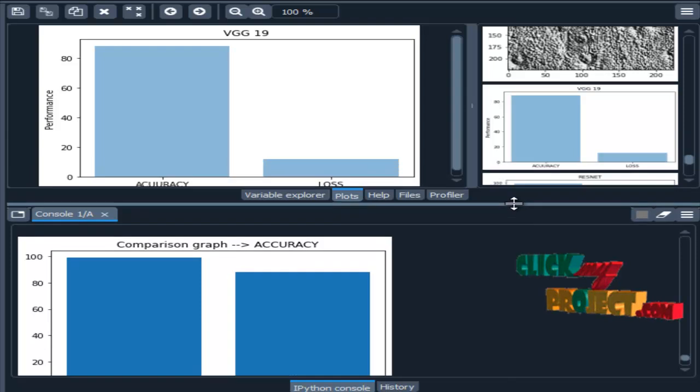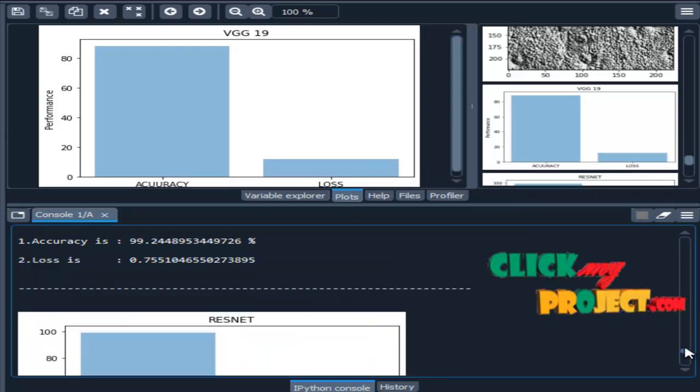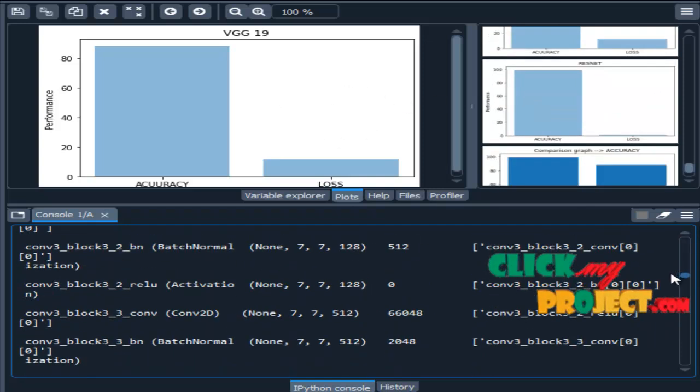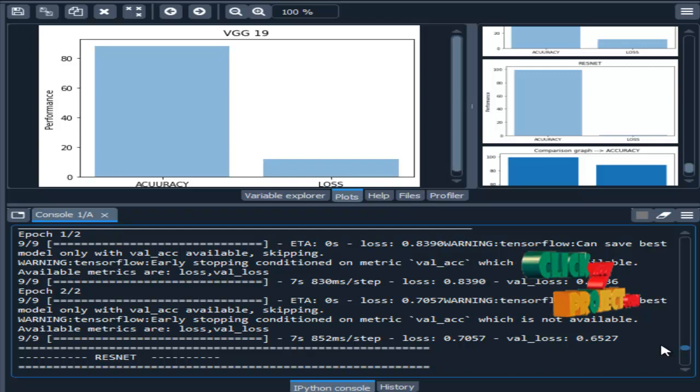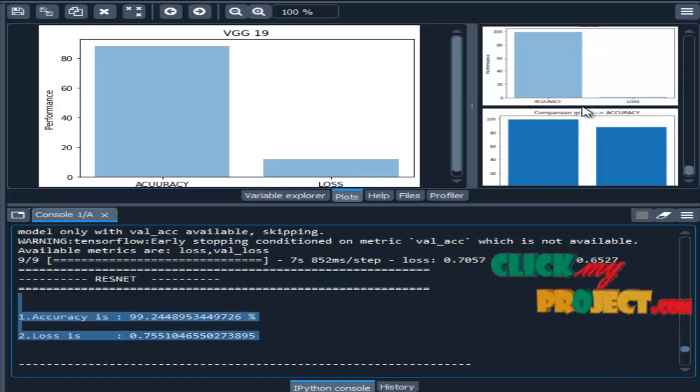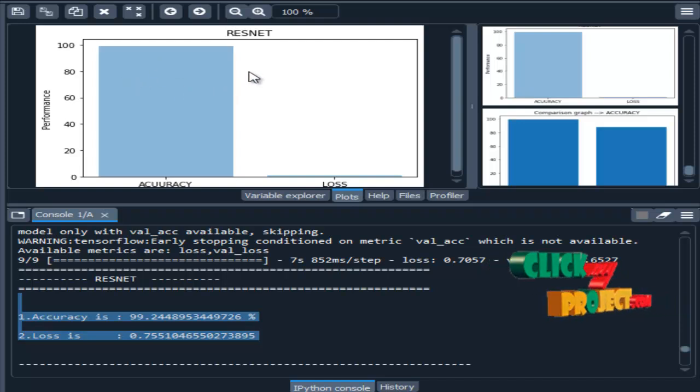Then, this is the comparison graph for VGG-19 based on the accuracy and loss value on ResNet. This is the result for ResNet 99.2. This is the graph for accuracy and loss of ResNet.